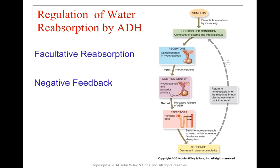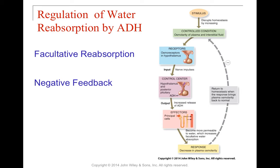If there is a change in the osmolarity of the plasma and interstitial fluid, osmoreceptors in the hypothalamus detect that change and send nerve impulses resulting in the release of ADH. Increased ADH goes to the principal cells, making them more permeable to water. When they become permeable to water, that increases water resorption, decreasing plasma osmolarity and increasing urine concentration — decreasing the water content of the urine. This returns us to homeostasis once plasma osmolarity returns to normal.